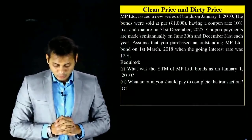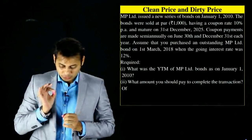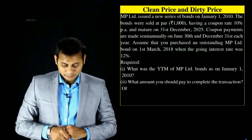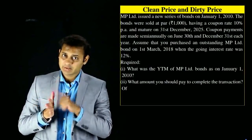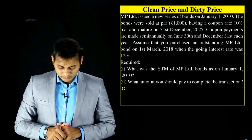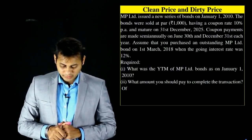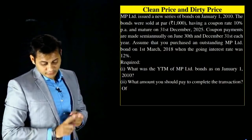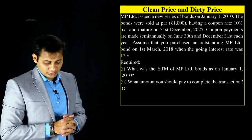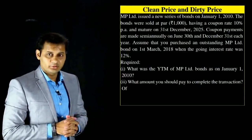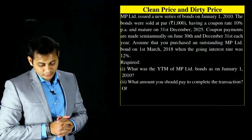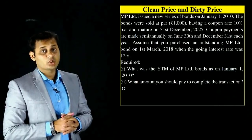MP Limited issued a new series of bonds on January 1, 2010. The bonds were sold at par — ₹1,000. The face value was ₹1,000. At a coupon rate of 10% per annum, maturing on December 31, 2025 — that is about 16 years. Coupon payments are made semi-annually on June 30th and December 31st.